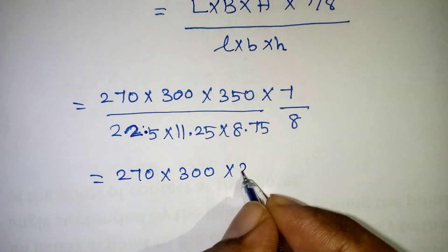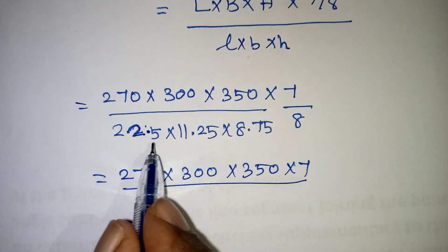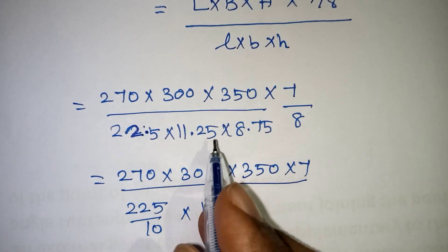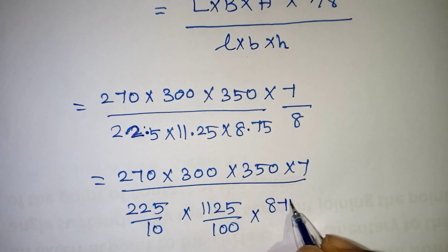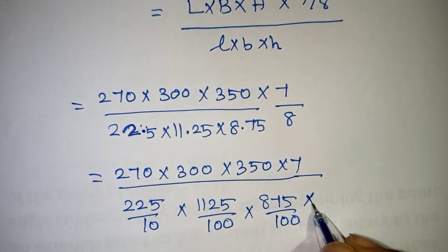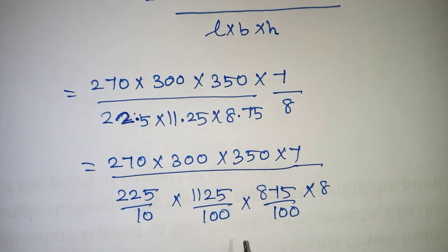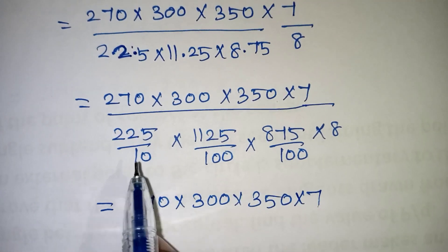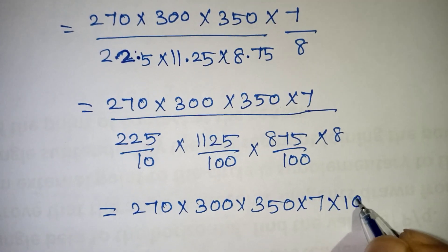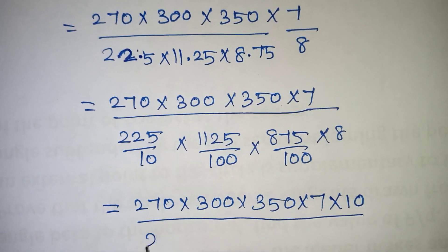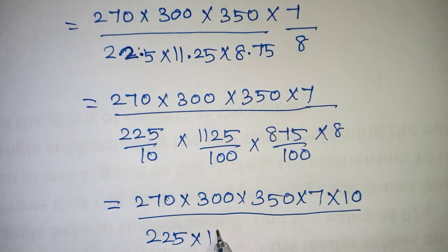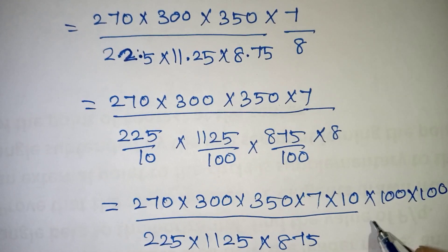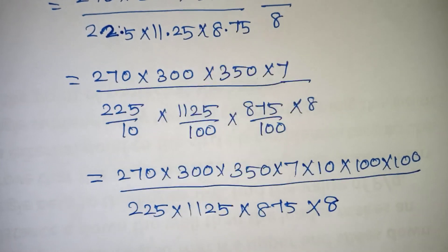The expression becomes: 270 into 300 into 350 into 7/8, divided by 22.5 into 11.25 into 8.75. Converting decimals to fractions: 22.5 is 225/10, 11.25 is 1125/100, and 8.75 is 875/100.